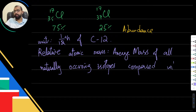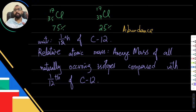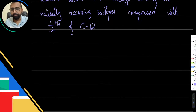So the definition is: relative atomic mass is the average mass of all naturally occurring isotopes relative to one twelfth of carbon-12. Now let's look at how we calculate this average — I'll give you an example.